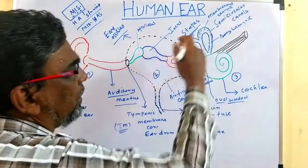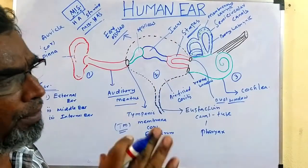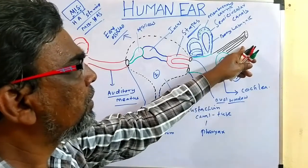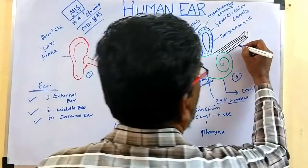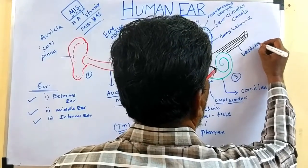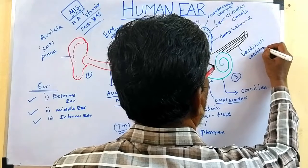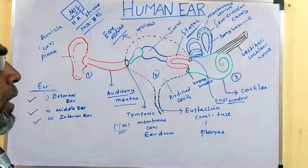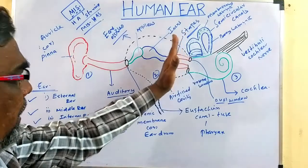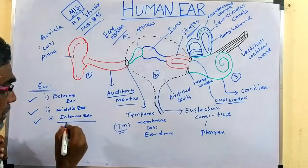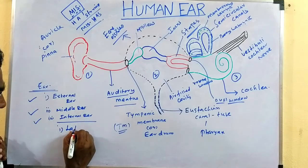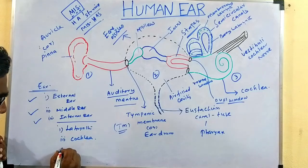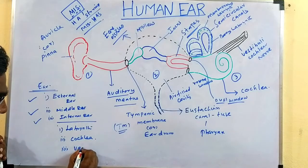In these canals, a fluid is present called perilymph and endolymph — we will discuss these later. The nerve arising from the cochlea is called the vestibulocochlear nerve. The inner ear has three structures: labyrinth, cochlea, and vestibule.